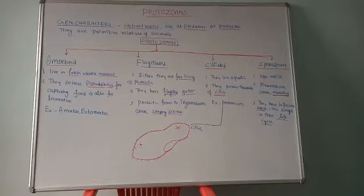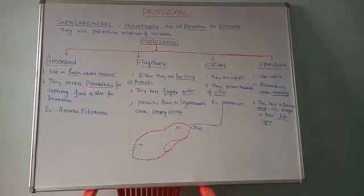The locomotory organ of the amoeboid group is pseudopodia. Pseudopodia are used not only for locomotion but also for capturing food material. They serve both purposes — locomotion and capturing food — and this is the key point of the amoeboid group.